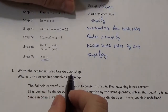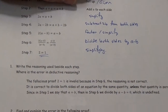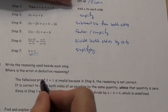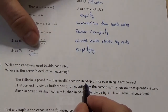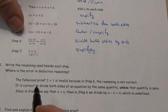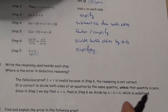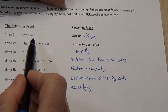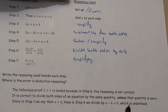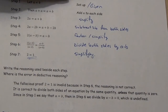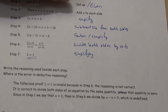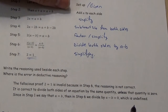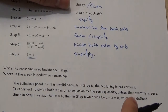The question says: write the reasoning used beside each step, then identify where the error is. This proof is invalid because in step 6, the reasoning is not correct. You can't divide both sides by a minus b, because if you go back to the original expression where a equals b, then what you've just done is divided by zero. If you can sneak that past somebody, you can prove basically anything — because that is not a valid step.